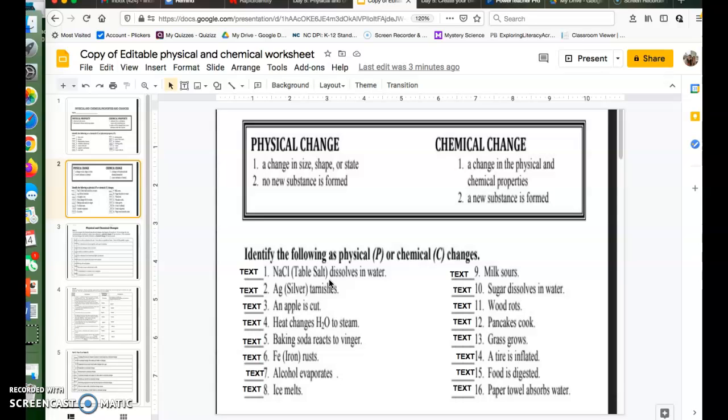Silver when it tarnishes, there's a chemical reaction happening here. The tarnish is what makes it darker in color. There's a change in the chemical properties and a new substance is formed, so it would also be a chemical change. An apple being cut, this would be an example of a physical change because we're just changing shape, size, shape and size of the apple, but the apple is still the same. We're just cutting it.